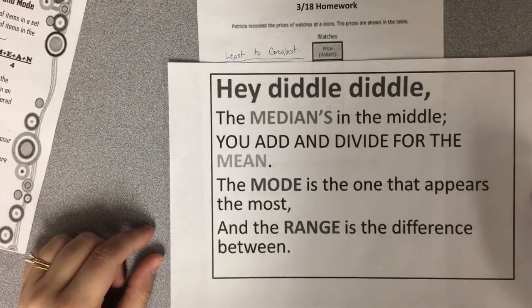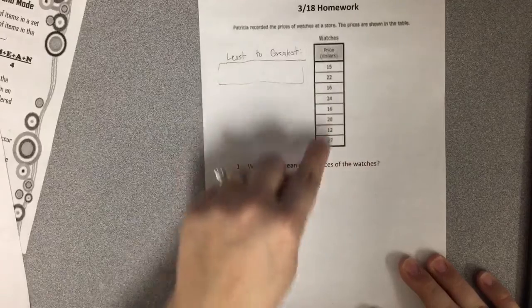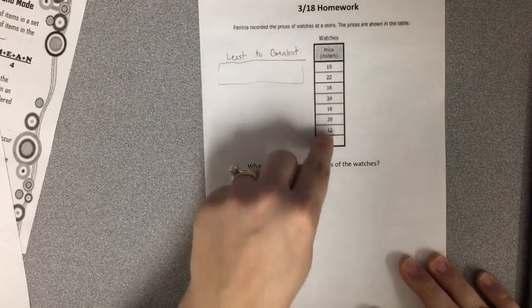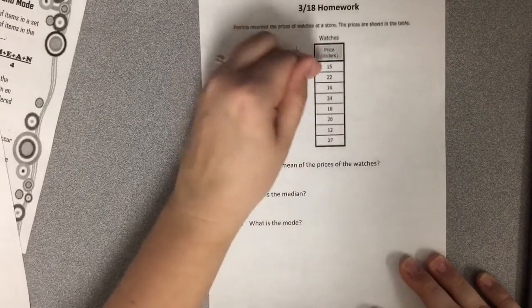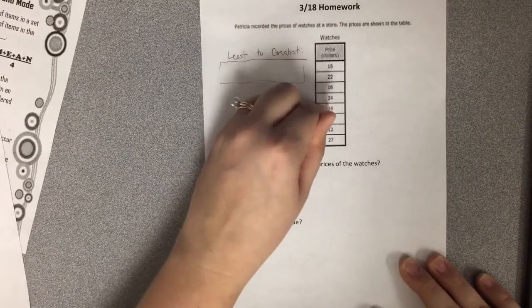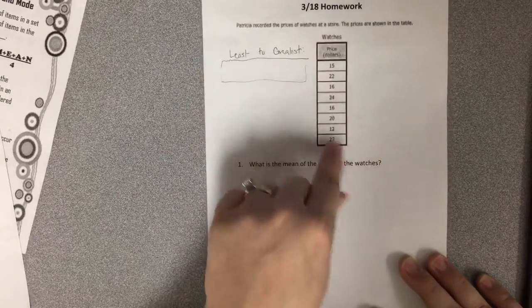Remember our rhyme. The median's in the middle. You add and divide for the mean. So you're going to add all of your numbers up and divide by the numbers that are here. So you have to divide by 1, 2, 3, 4, 5, 6, 7, 8. So you're going to add those up and divide by 8.